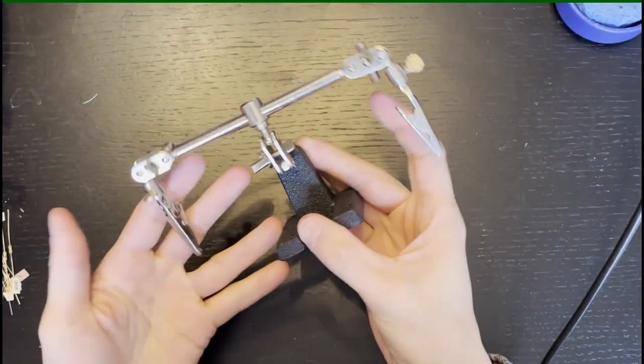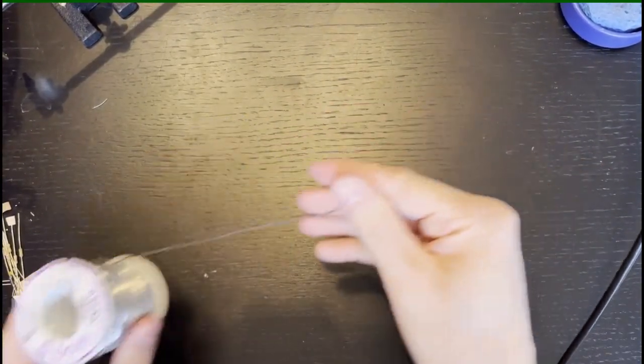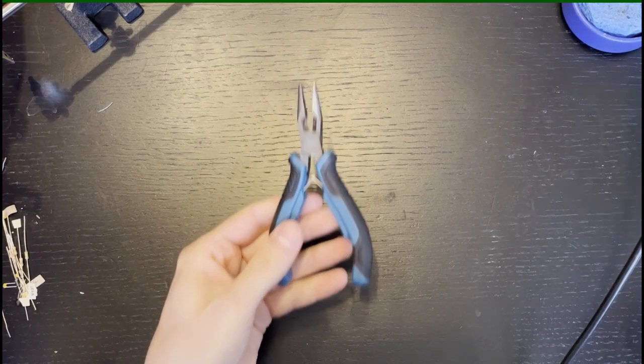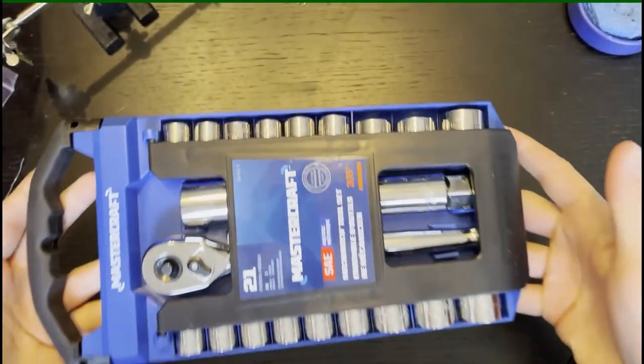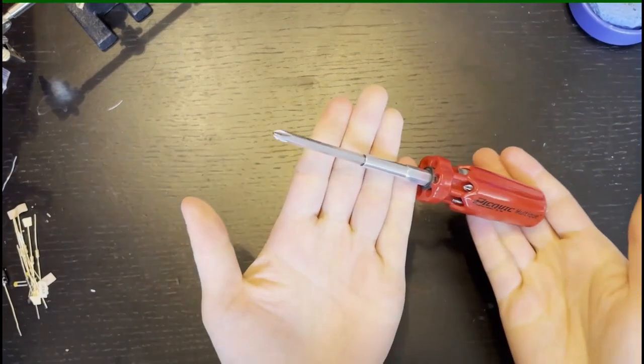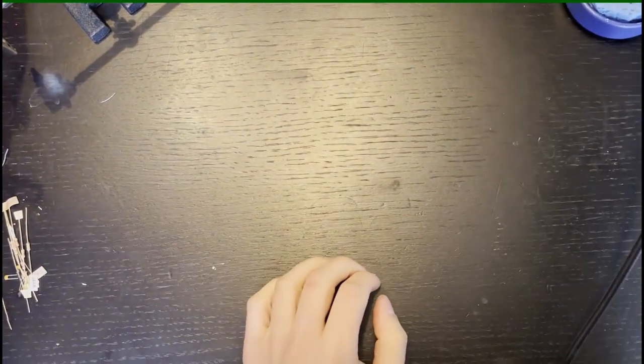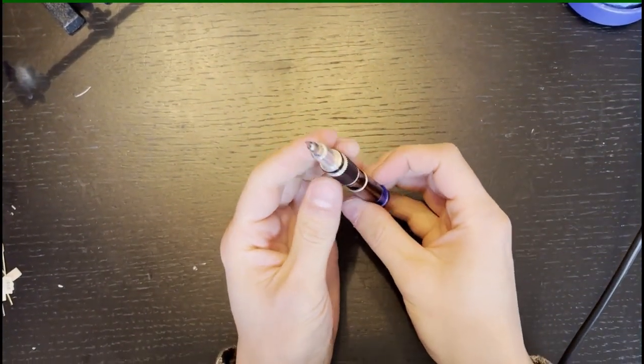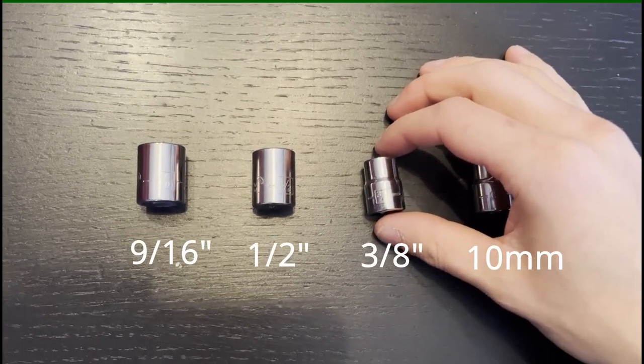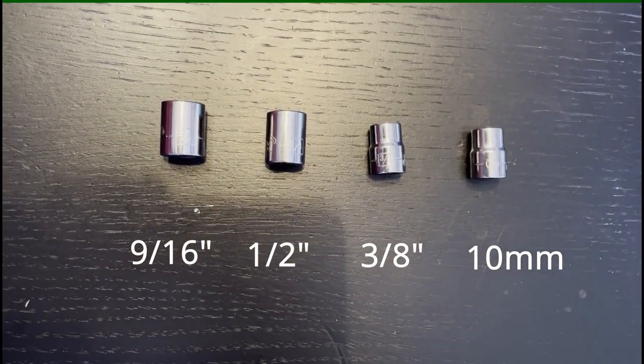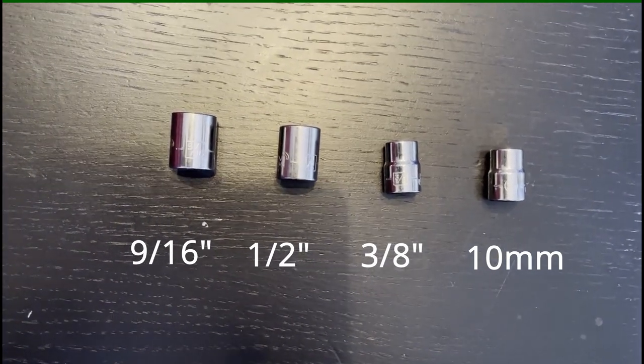The tools you'll need will be a soldering iron, helping hands, solder, a pair of needle nose pliers and wire clippers, a socket set, I'll show you which sockets we'll use, a phillips head 2 screwdriver, and lastly a small flat head screwdriver for putting the knob on. The sockets you'll use are going to be 10 millimeters, 3 eighths of an inch, half an inch, and 9 sixteenths of an inch.